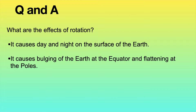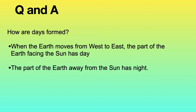What are the effects of rotation? It causes day and night on the surface of the Earth. It also causes bulging of the Earth at the equator and flattening at the poles.